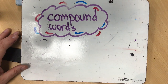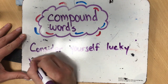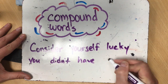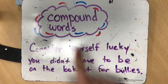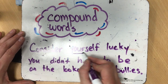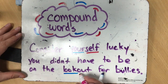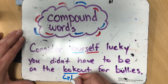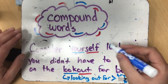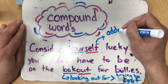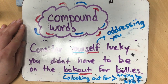Here is a really good sentence with two compound words in it: Consider yourself lucky you didn't have to be on the lookout for bullies. Can we find them? We've got yourself and we've got lookout. Lookout doesn't mean that you're looking out at something — it's more like spying, looking ahead, or watching out for something. And yourself is a really tricky one to define. It basically means you're addressing yourself personally.